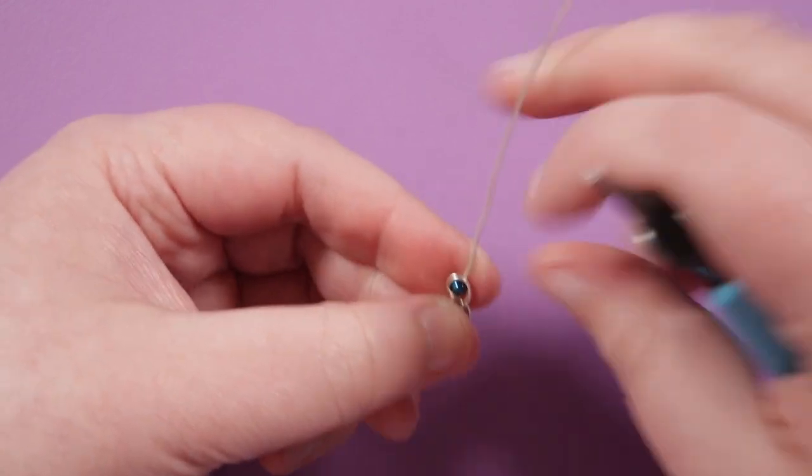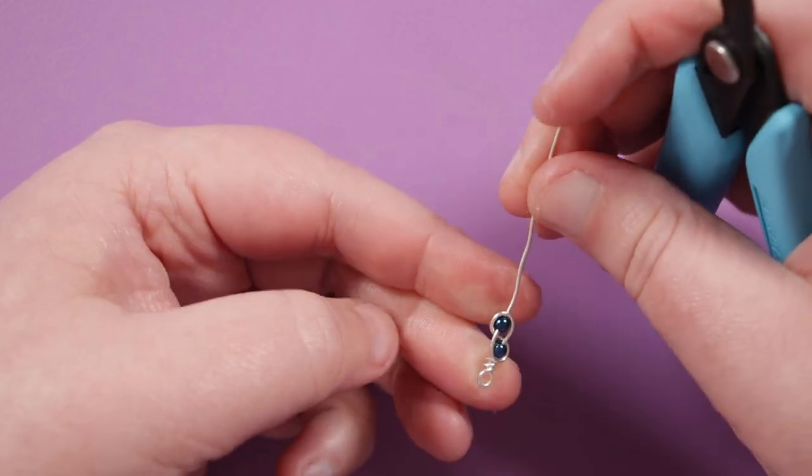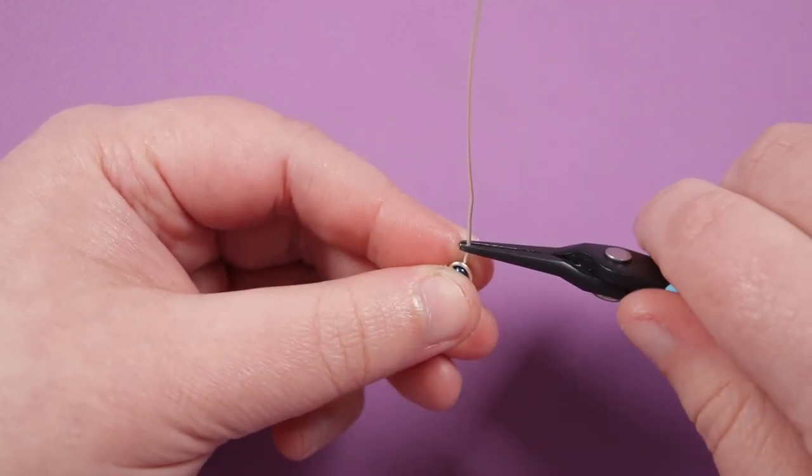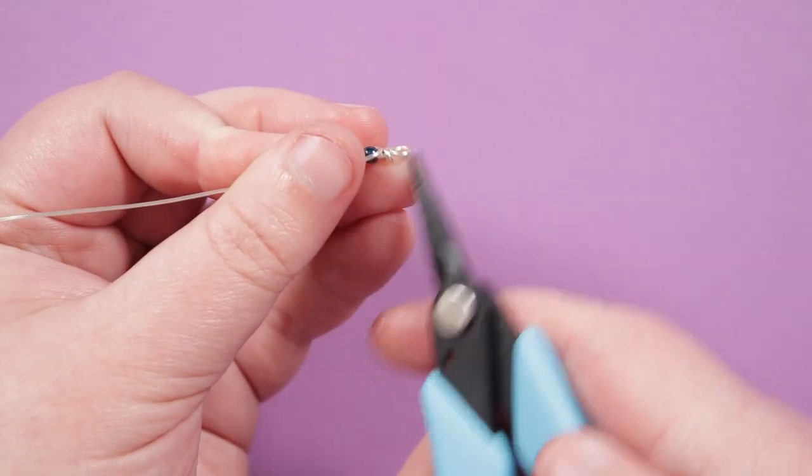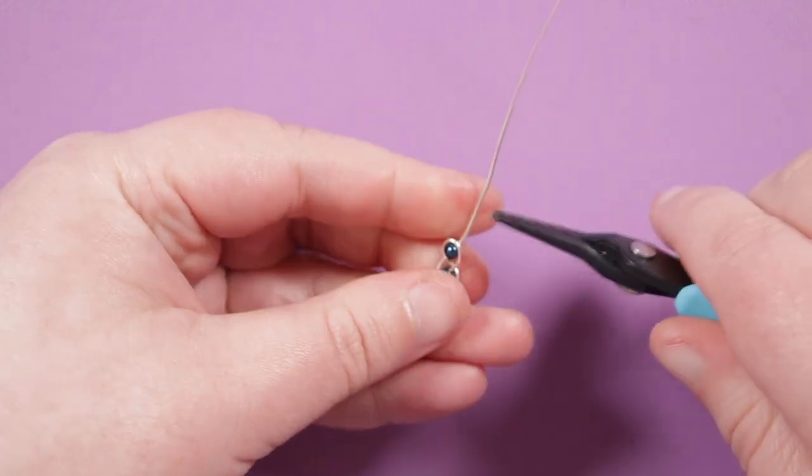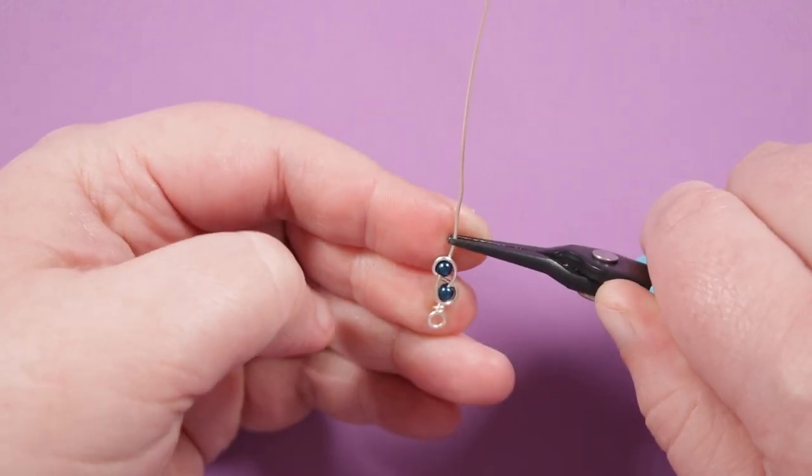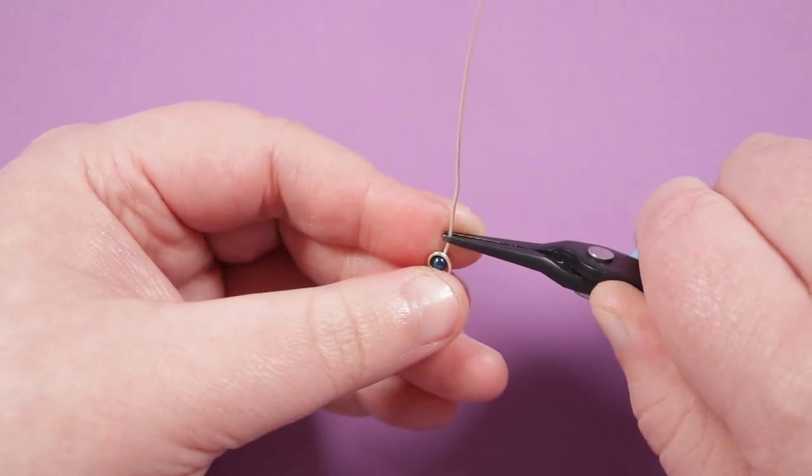On the other end I'm gonna also make a wrap loop but what I like to do is make sure that they're sitting in opposite directions so before I started making a bend sideways so we end up with a flat loop here here I'm gonna have the piece facing towards me and then make a bend basically towards the back like that.